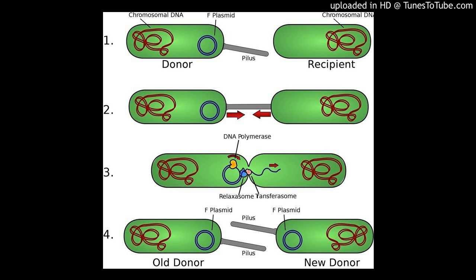Now the second type: transformation — immigration of DNA to our nation. Could happen in a lab via bacterial lysis. Bacterial transformation comes at high prices.